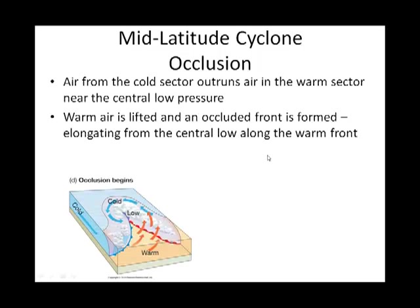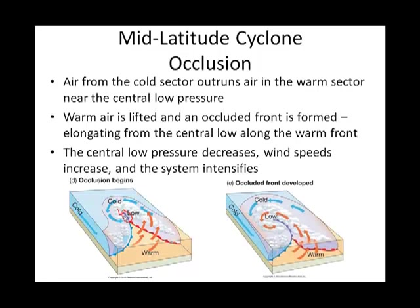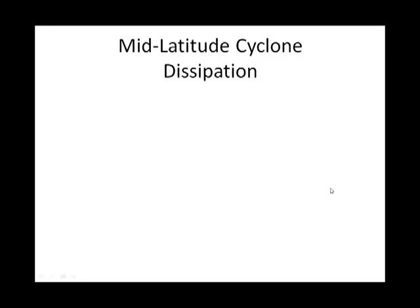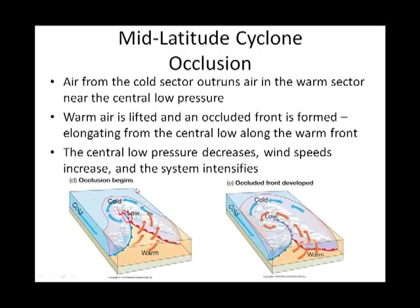The next stage is when occlusion begins. Notice here we now have an occluded front — a cute little occluded front extending down from our central low. The occluded front will then become elongated. The difference between stages D and E is that occlusion begins and then the occluded front develops. At this point, the system is most intense.